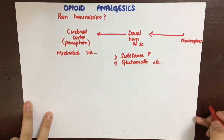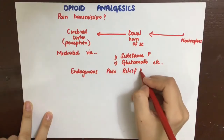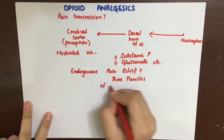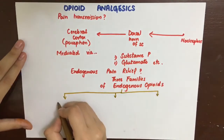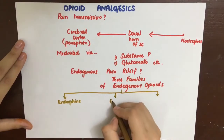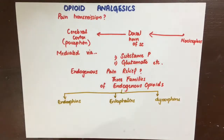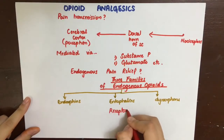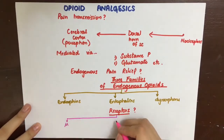Our own body also tries to cope with pain by producing endogenous substances. There are mainly three families of endogenous opioids: endorphins, enkephalins, and dynorphins. The endogenous opioid system is one of the innate pain-relieving systems. These opioids act as neurotransmitters and neuromodulators at three major classes of receptors.